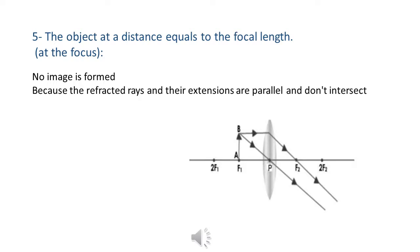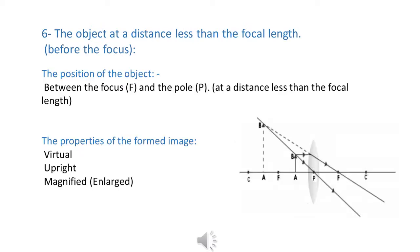When the object is at a distance equal to the focal length, it means the object is at the focus. Here, no image is formed because the refracted rays and their extensions are parallel and do not intersect. When the object is at a distance less than the focal length — the object is before the focus — the properties of the image are: virtual, upright, and magnified.